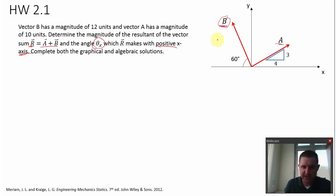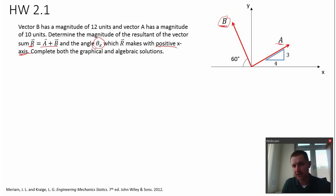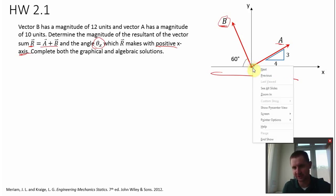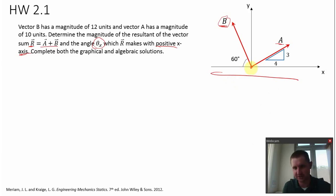I'll start out with the graphical approach. There are two ways to add vectors graphically: we can use the parallelogram law or we can use the triangle rule. Starting with this picture, the problem is already set up to use the parallelogram law because the two tails of the vectors already start in the same position. So I can just form a parallelogram with these two sides, A and B, that I have already.